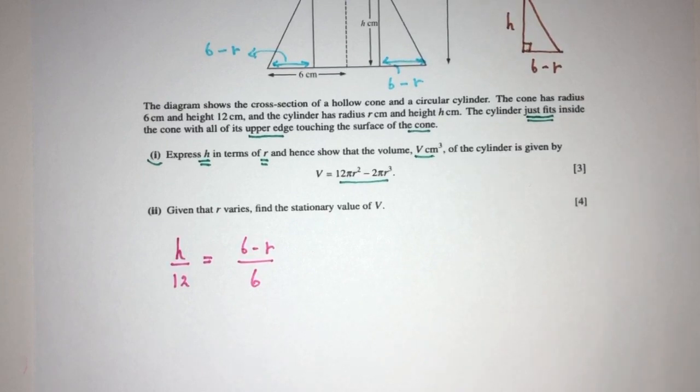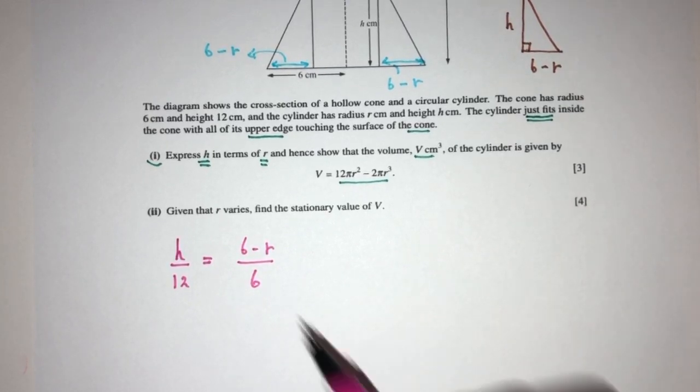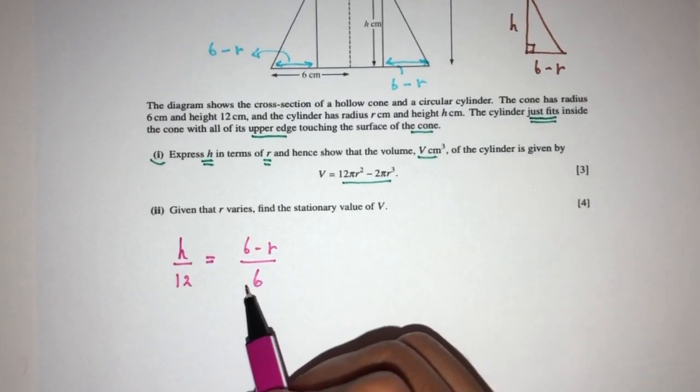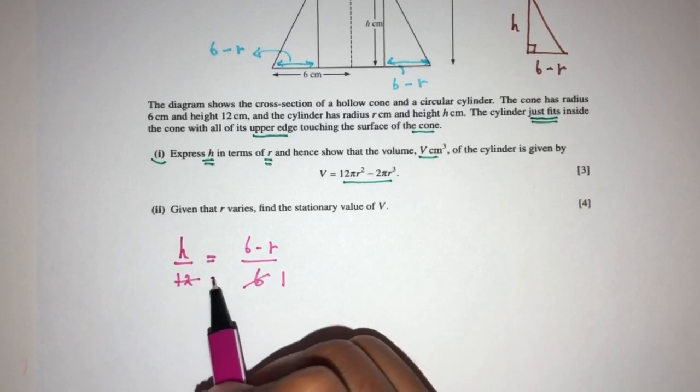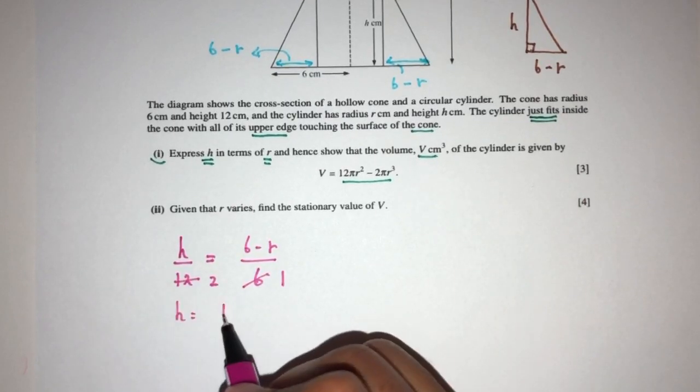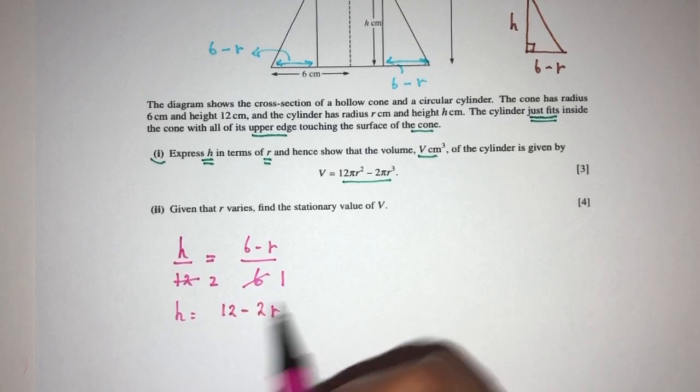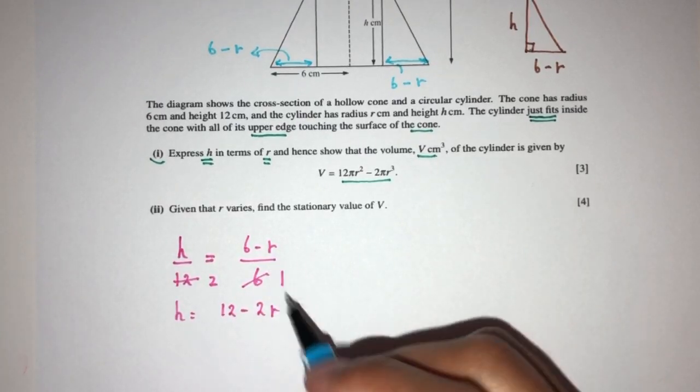Now we can simplify and express H in terms of R. So divided by 6, that will be 1, and that will be 2. So H will have to be 12 minus 2R. H in terms of R is right here.